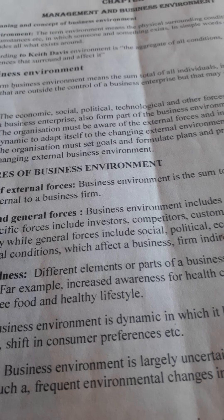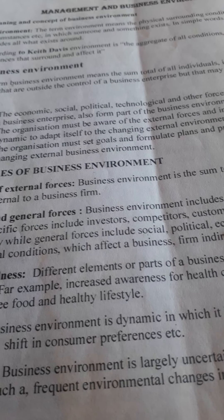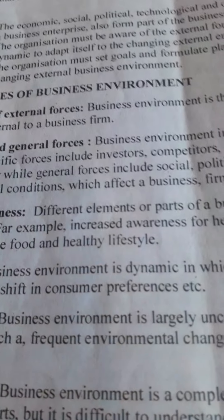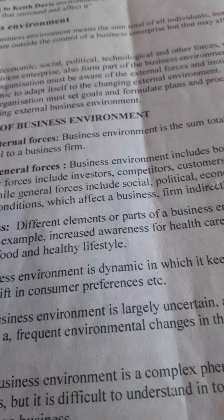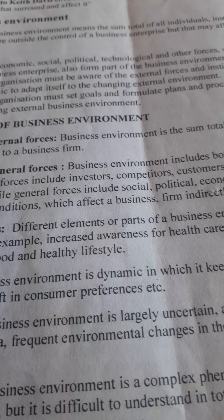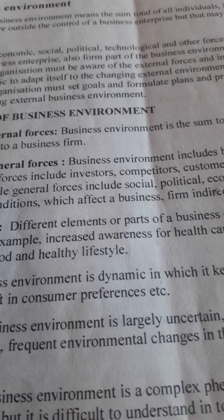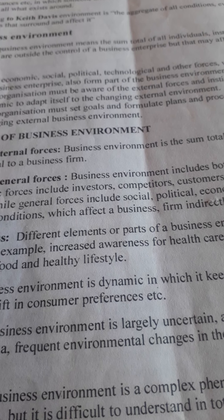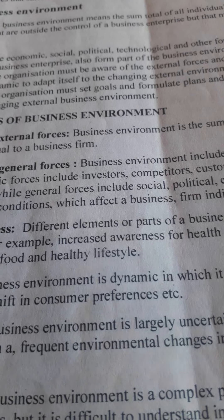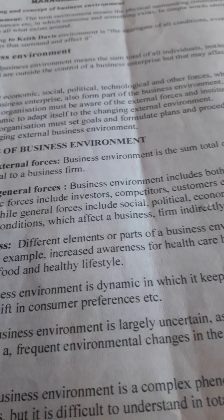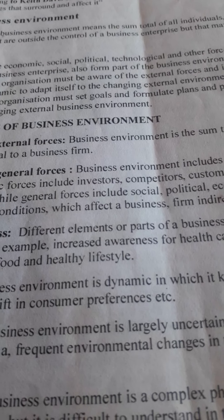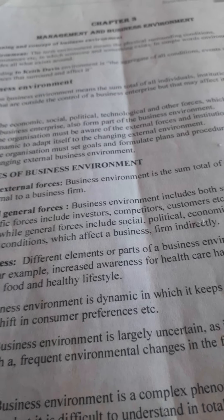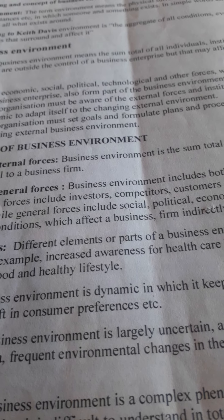Fourth feature is dynamic. Business environment is dynamic in that it keeps on changing with the change in technology, shift in customer preferences, etc. Fifth feature is uncertainty. Business environment is largely uncertain as it is difficult to predict the future happenings, such as frequent changes in the field of technology and fashion industries. Sixth feature is complexity. Business environment is a complex phenomenon which is easier to understand in parts but difficult to understand in totality. It is difficult to judge the impact of change on business.